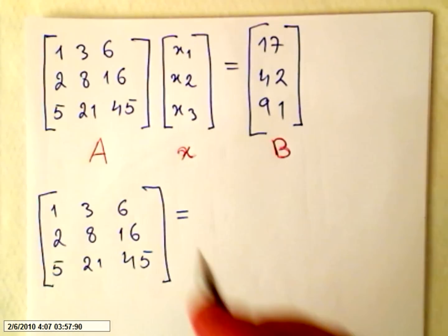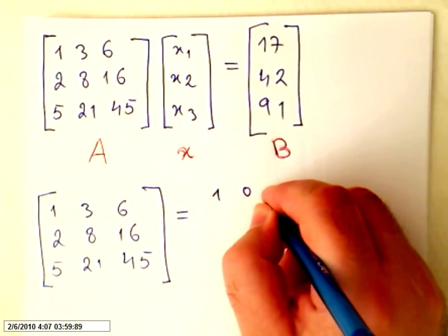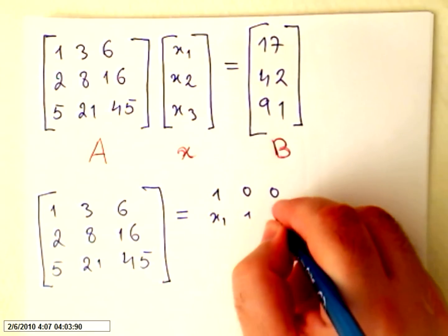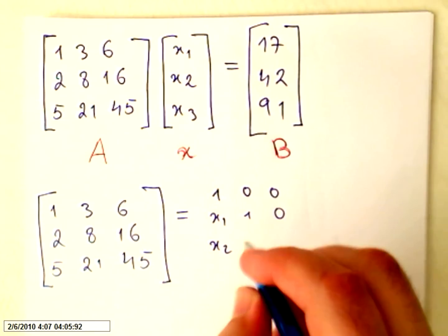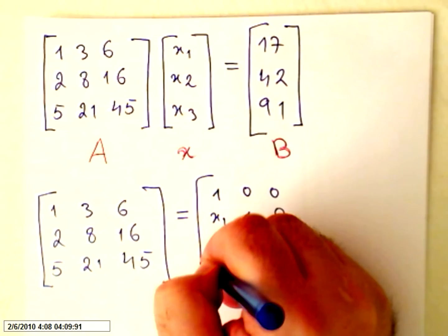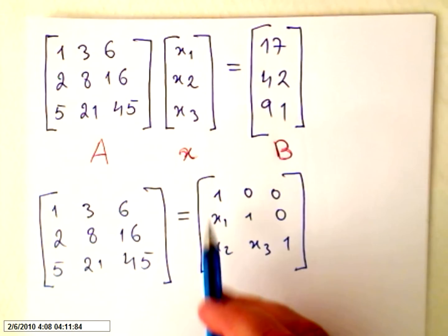So I want a matrix with this format: 1, 0, 0, x1, 1, 0, x2, x3, 1, lower triangular.